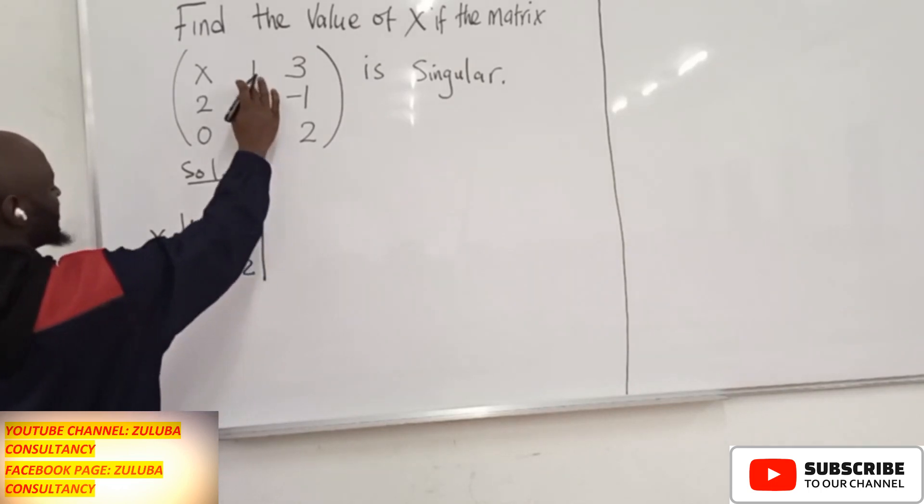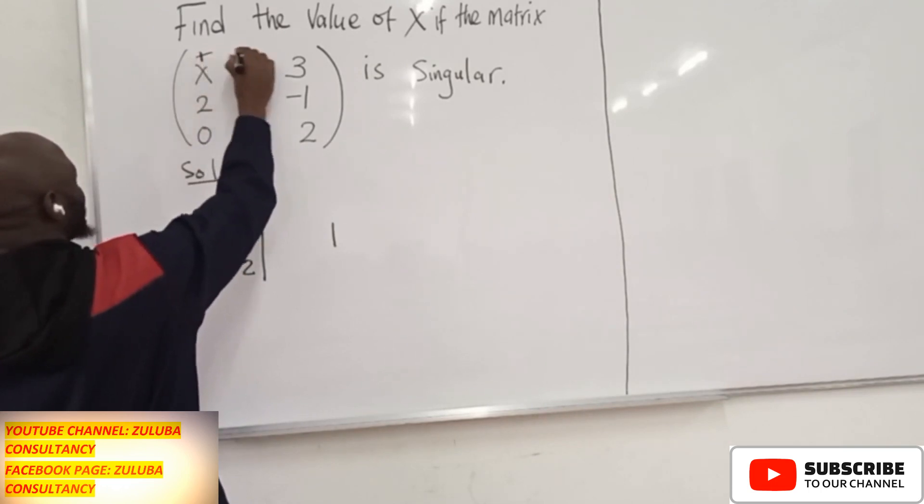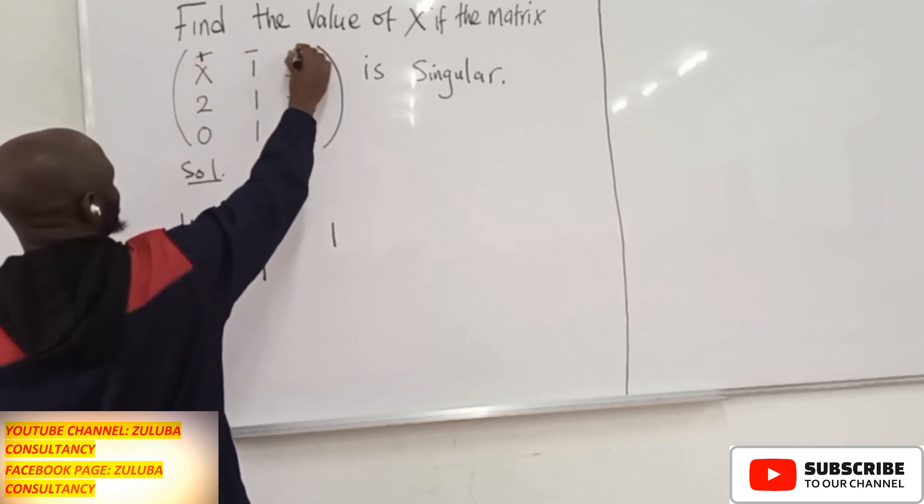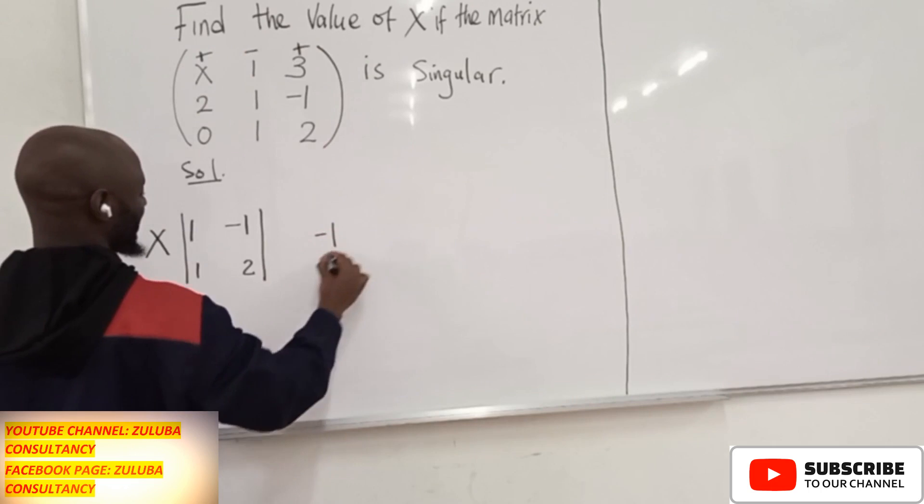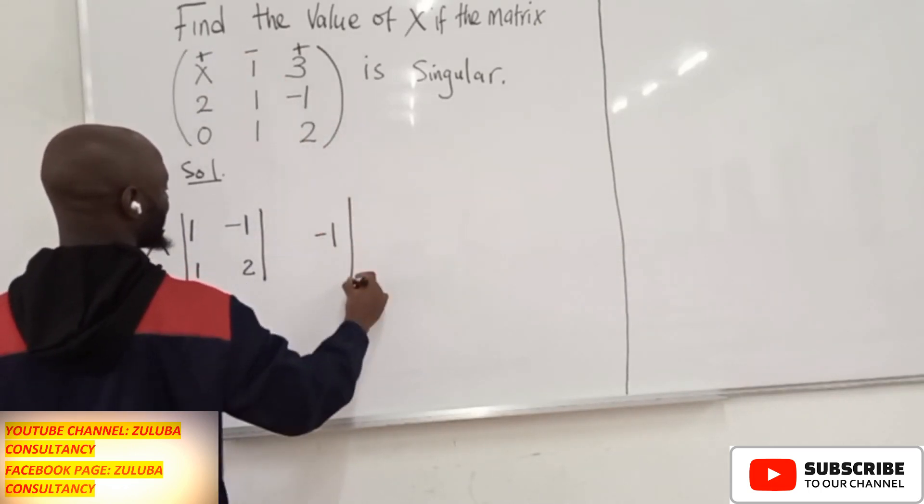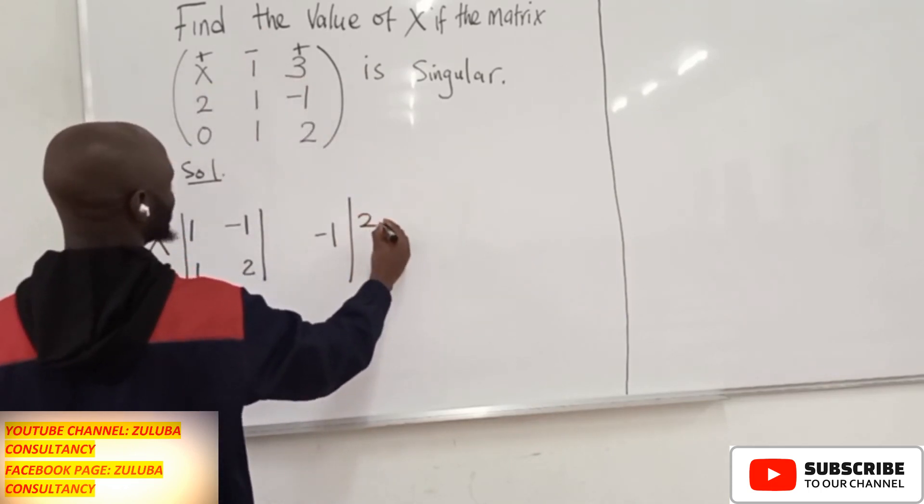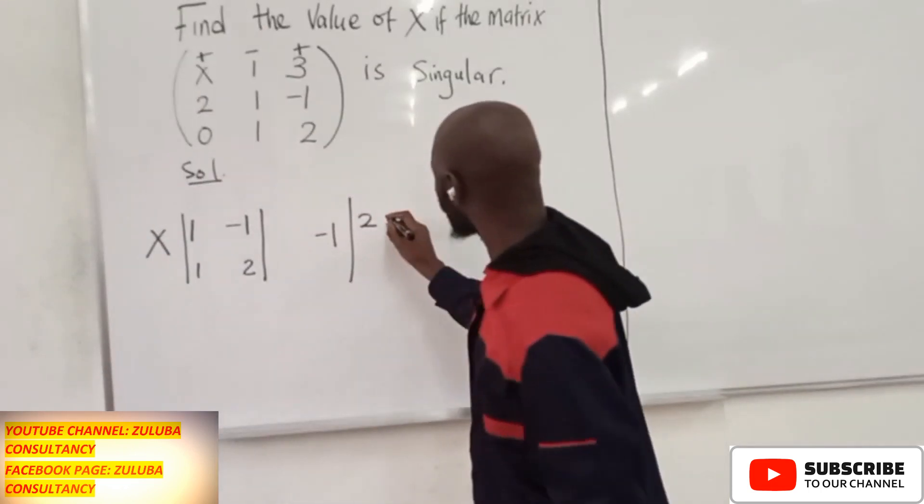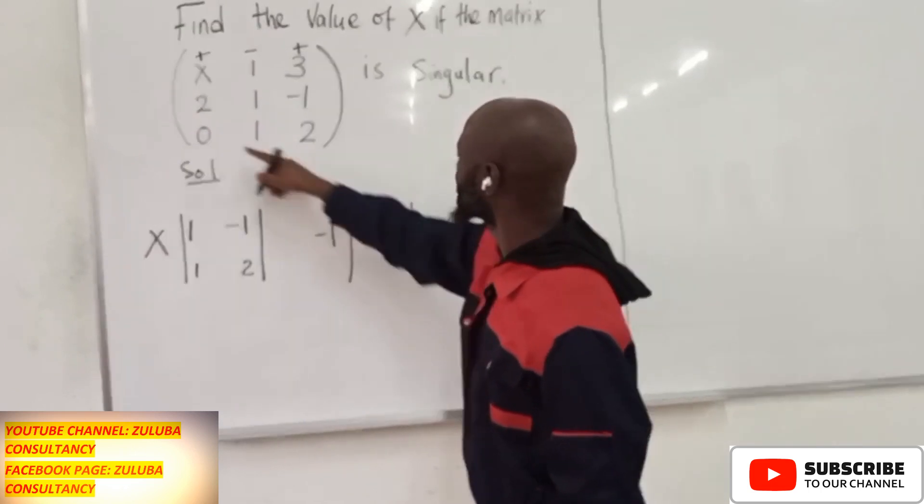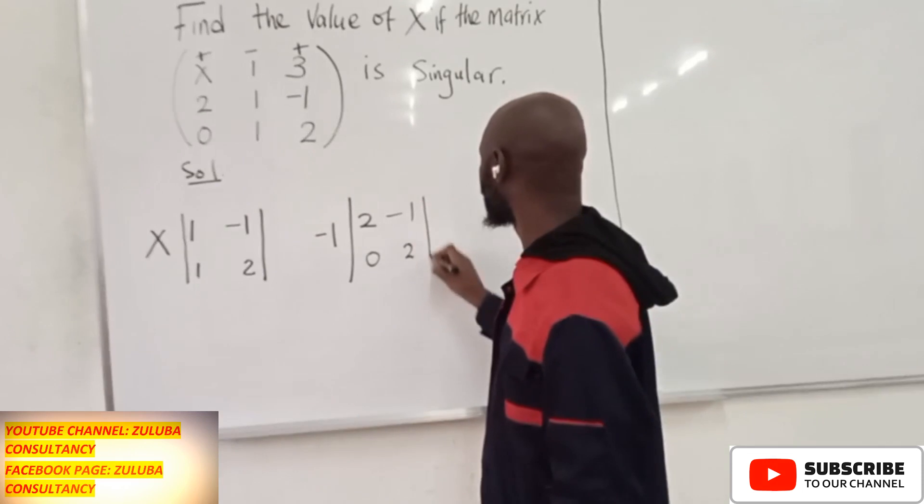You come to this position, it's 1, but remember, this position is plus, this is negative, this is negative, and this is plus. So you put minus 1 because of the position. And then you delete the column and the row. You will remain with 2, minus 1, then 0, 2, plus.